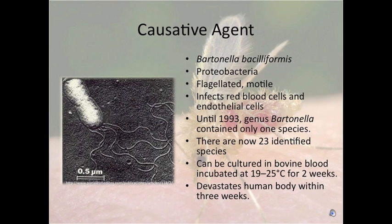The causative agent for Carrion's disease is Bartonella bacilliformis, a proteobacteria. It's flagellated and motile, and infects red blood cells and endothelial cells in the human. Until 1993, genus Bartonella contained only one species; however, there are now 23 identified species. This bacteria can be cultured in bovine blood and incubated at 19 to 25 degrees Celsius for two weeks. It devastates the human body within three weeks, as seen in the case of Carrion himself.